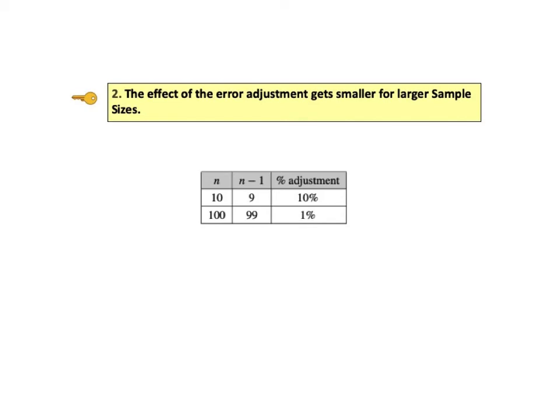For large values of n, the difference between n and n-1 can be negligible. As we see here, the difference is 10% for a sample of 10, but for a sample of 100, the percent adjustment is only 1%.